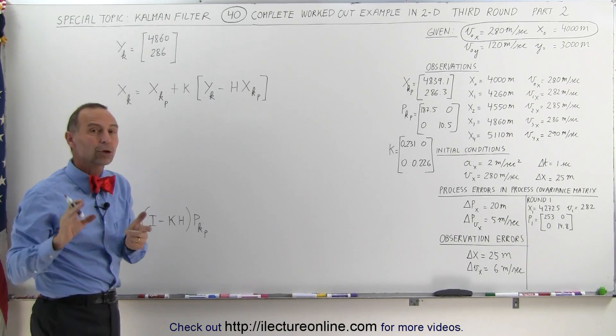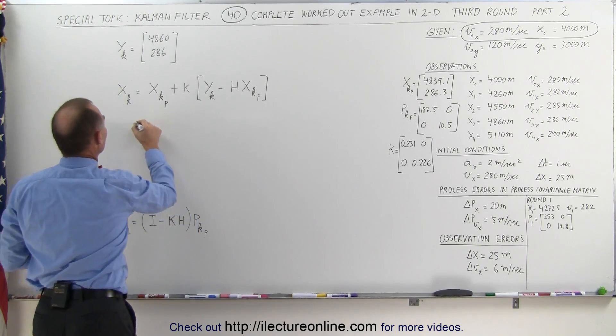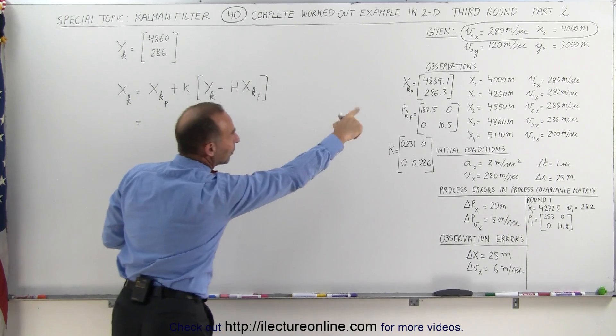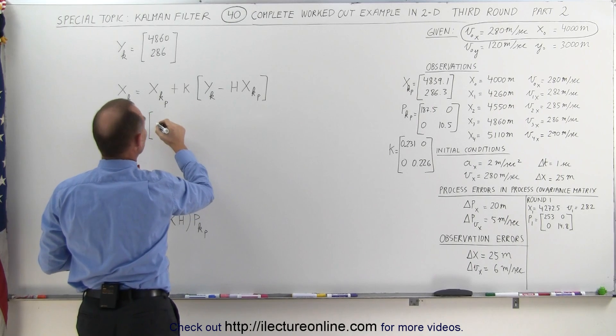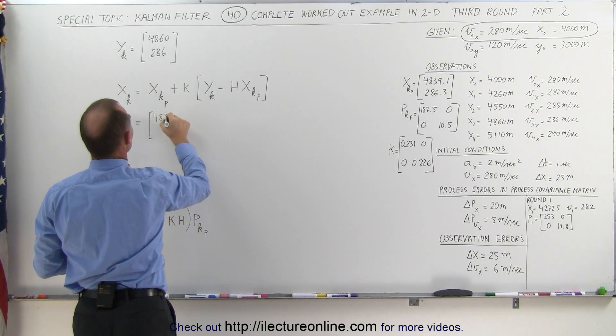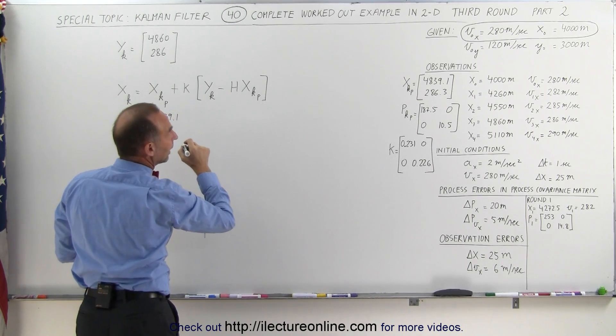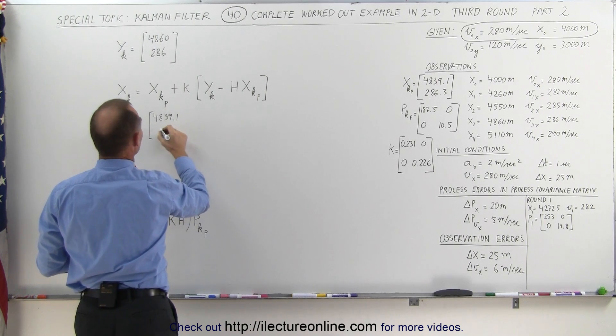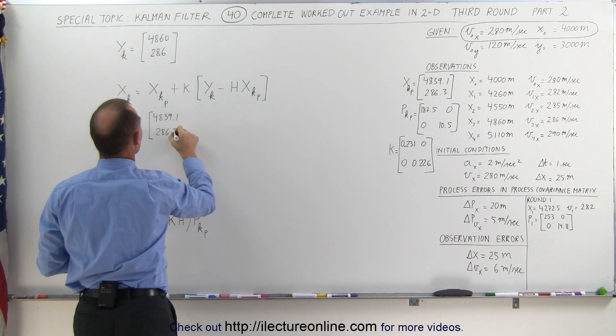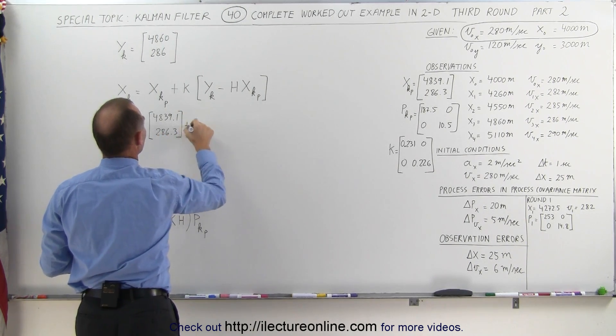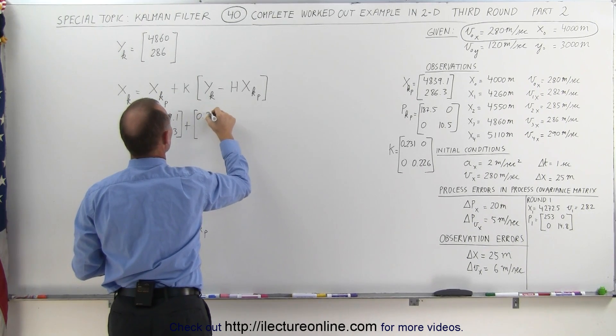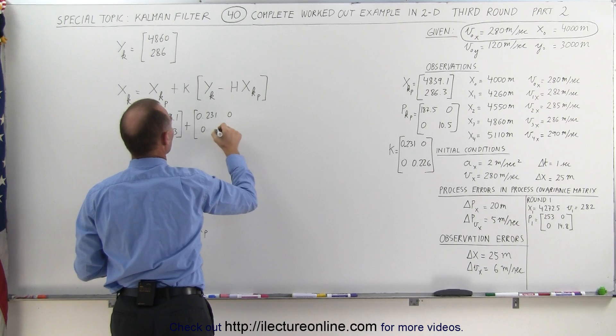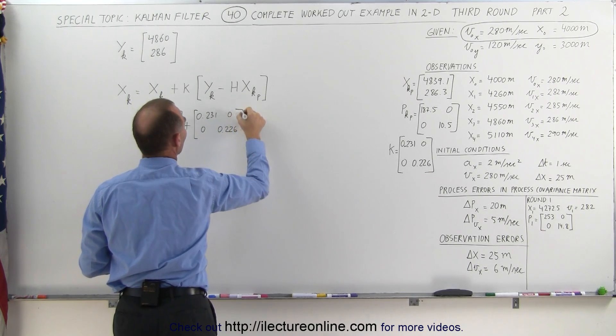We're now ready to calculate the current state matrix. This is equal to the predicted state matrix, and we have that right there: 4839.1 and 286.3. Plus the Kalman gain. The Kalman gain is 0.231, 0, 0, 0, 0.226.